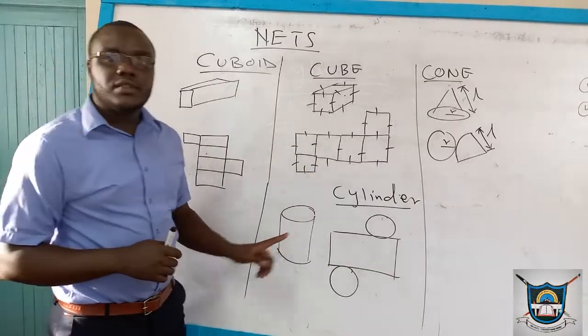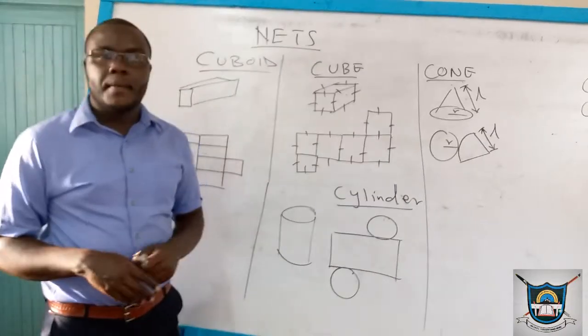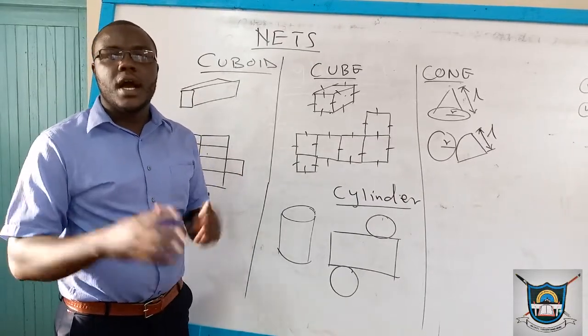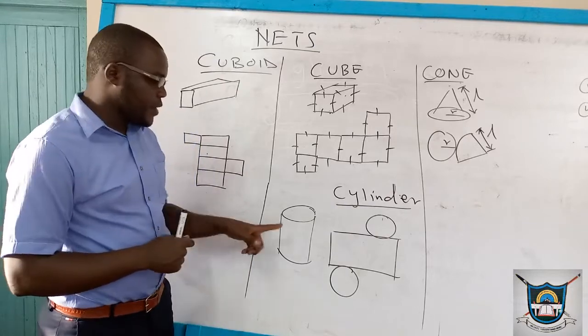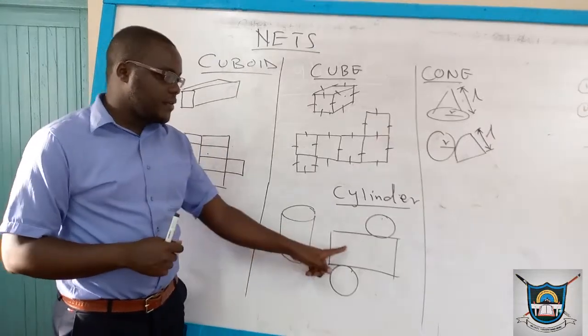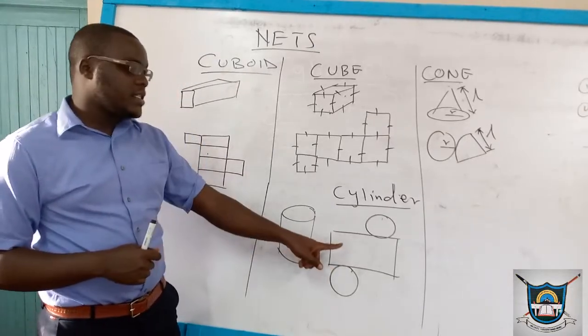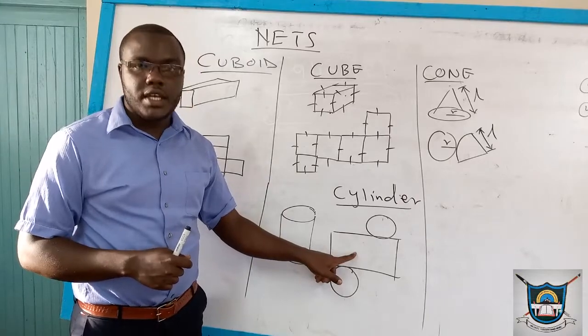Next we went to a cylinder. These are the containers — a drum, a cup, as seen. When you have its net, it has the shape which is drawn here.